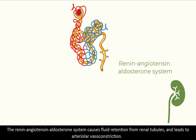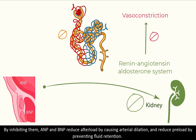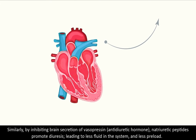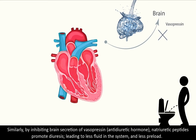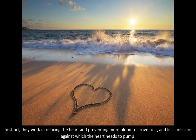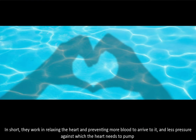The renin-angiotensin-aldosterone system causes fluid retention from renal tubules and leads to arteriolar vasoconstriction. By inhibiting it, ANP and BNP reduce afterload by causing arteriolar dilatation, and reduce preload by preventing fluid retention. Similarly, by inhibiting brain secretion of vasopressin, which is the antidiuretic hormone, natriuretic peptides promote diuresis, leading to less fluid in the system and less preload.